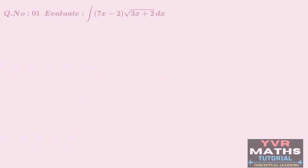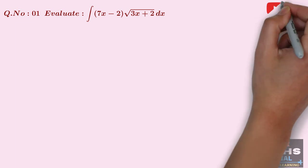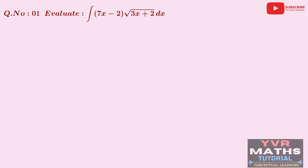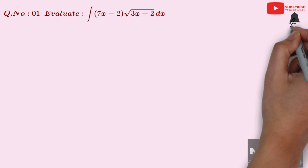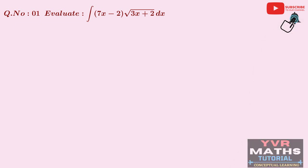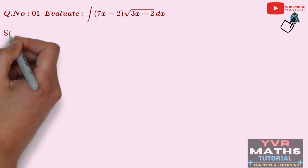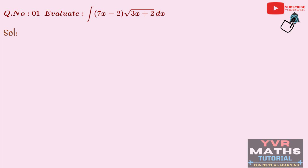Question 1: Evaluate integral (7x − 2)·√(3x + 2) dx. The given problem is clearly in the form of integral (AX + B)·√(CX + D) dx. We should follow the algorithm discussed. Let I = integral (7x − 2)·√(3x + 2) dx.